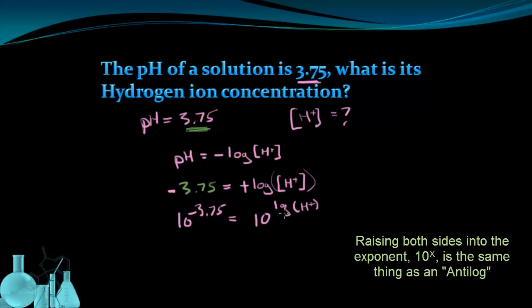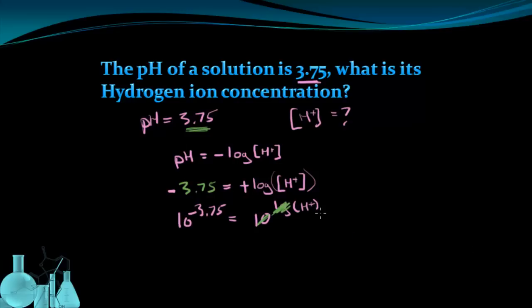Without getting into too much math here, raising a log as a power of 10 basically undoes both of these. So now my equation is 10 to the negative 3.75 equals my hydrogen ion concentration. Now I can't leave this number as a decimal. The power of 10 can't be decimal up here. So if you just type this into a calculator, it will return the value in proper scientific notation. In this case, it's going to be 1.8 times 10 to the negative fourth molar as the concentration of hydrogen ions.